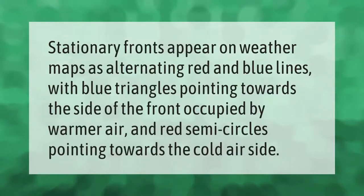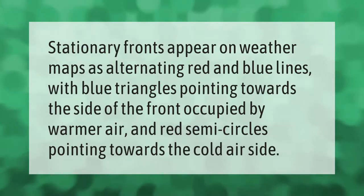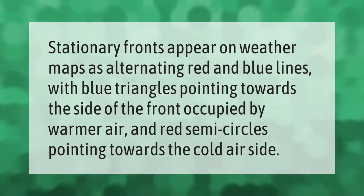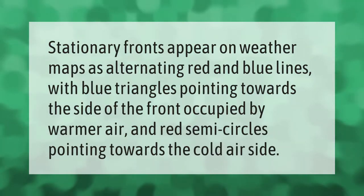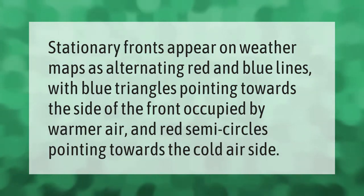Stationary fronts appear on weather maps as alternating red and blue lines, with blue triangles pointing towards the side of the front occupied by warmer air, and red semicircles pointing towards the cold air side.